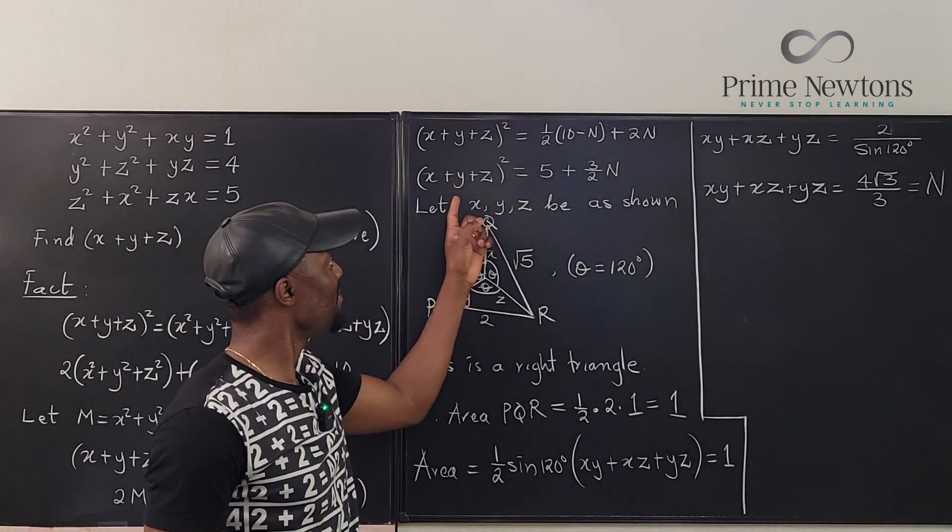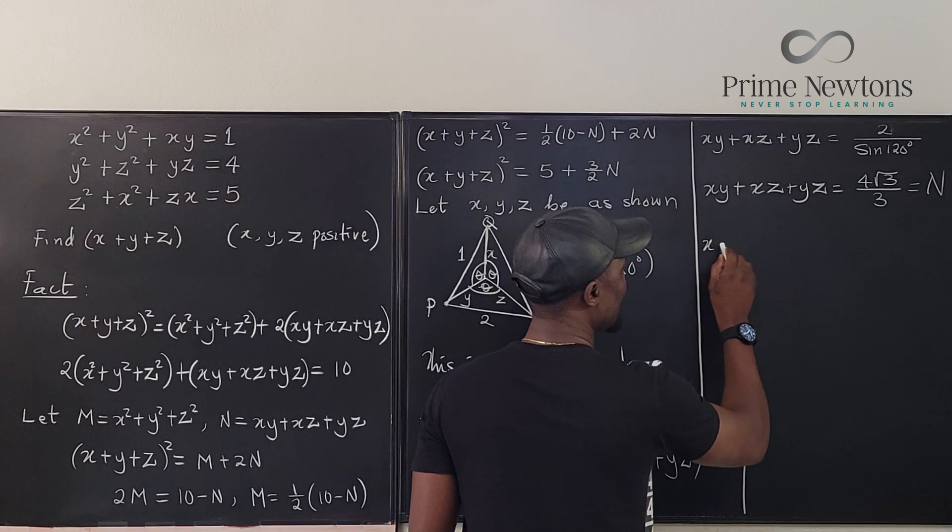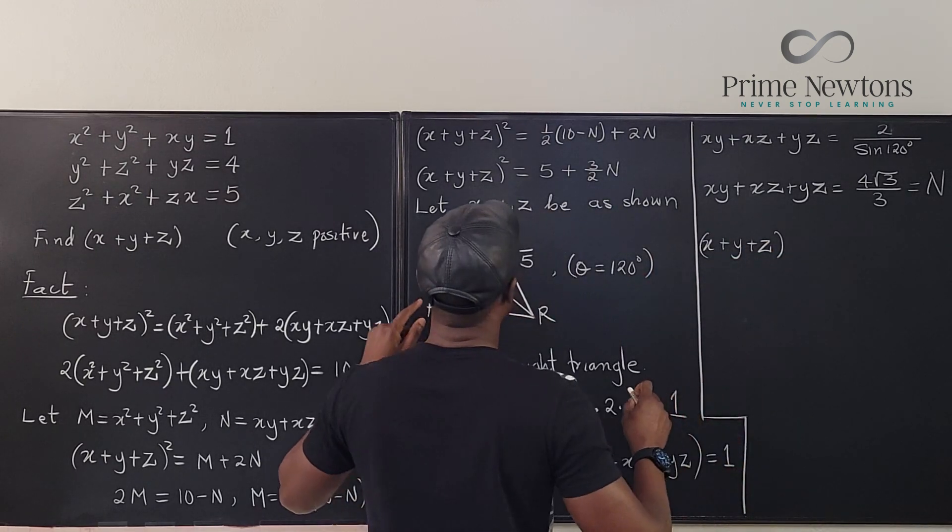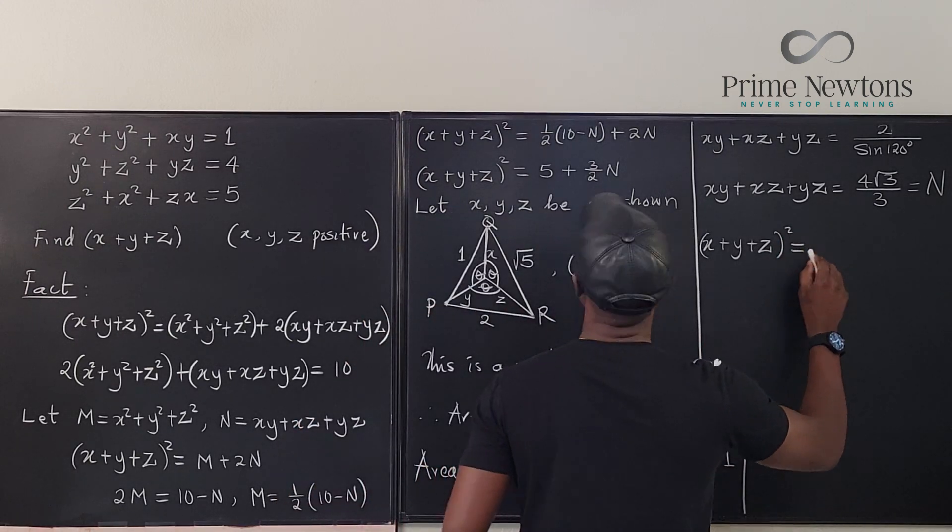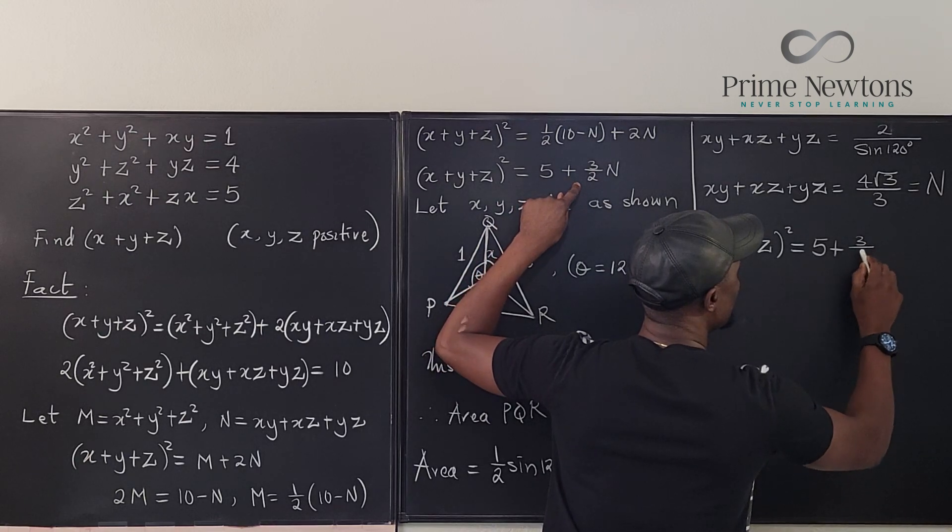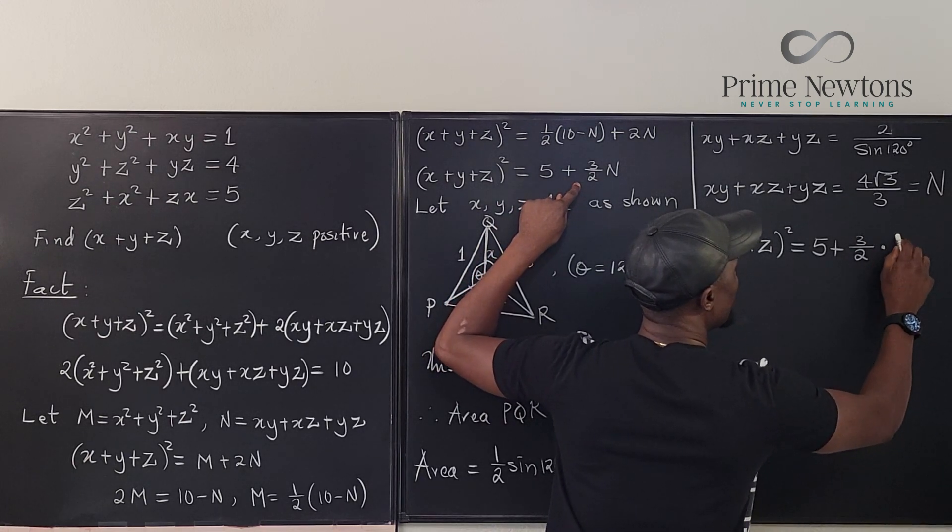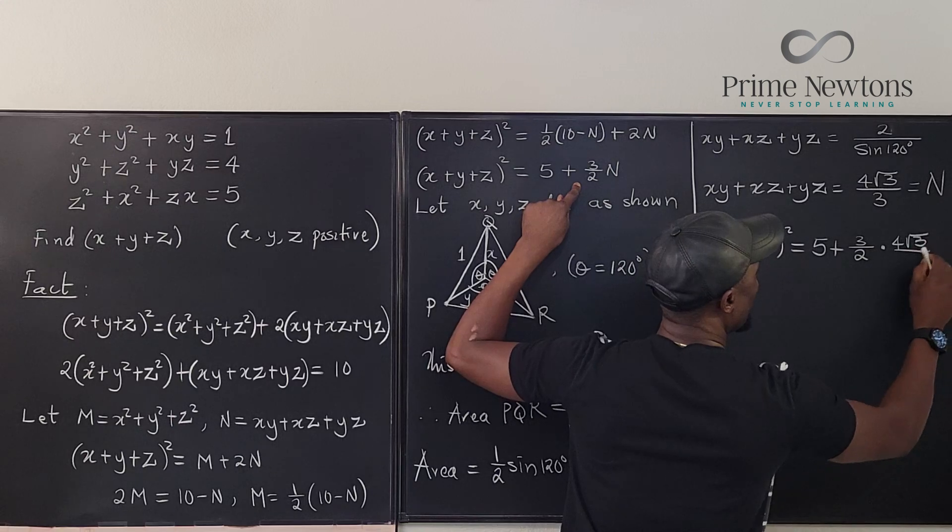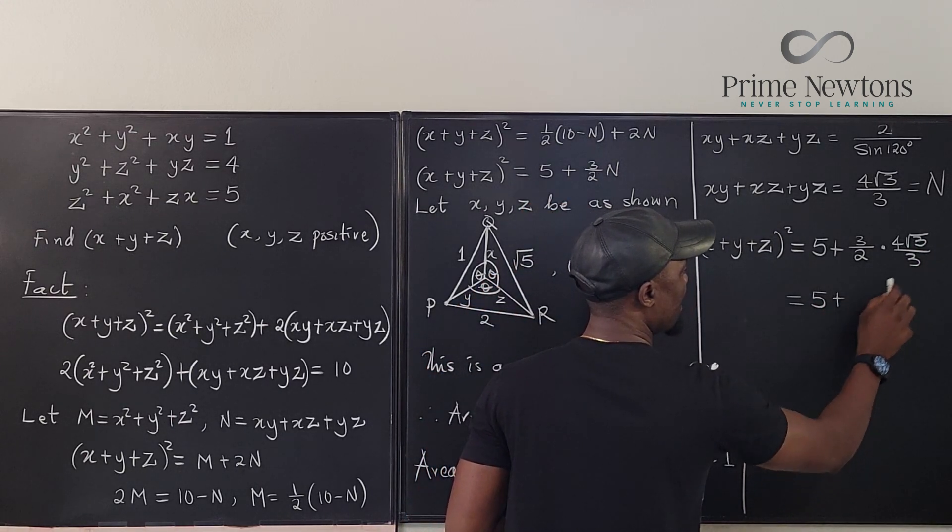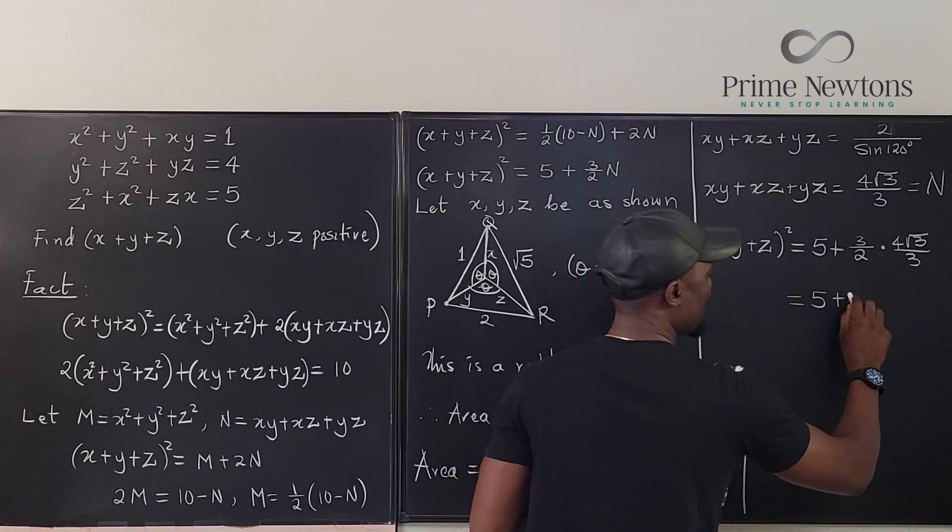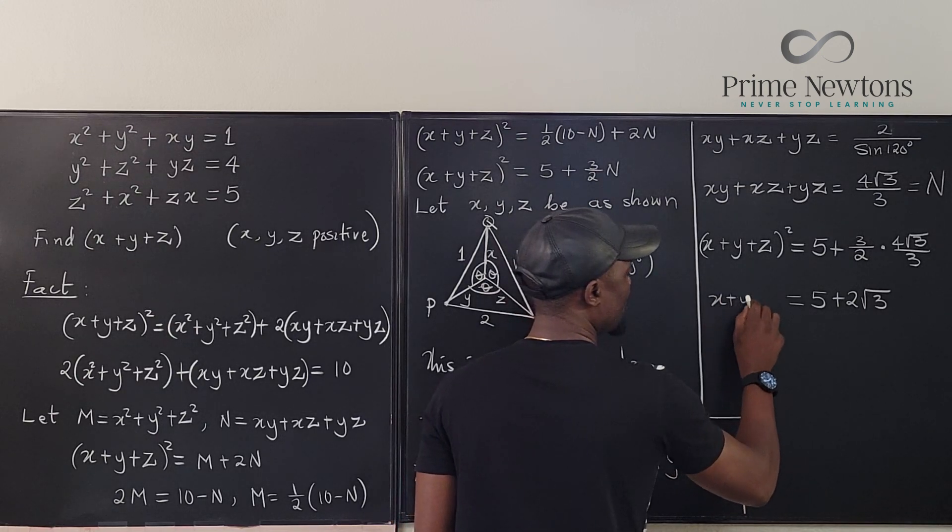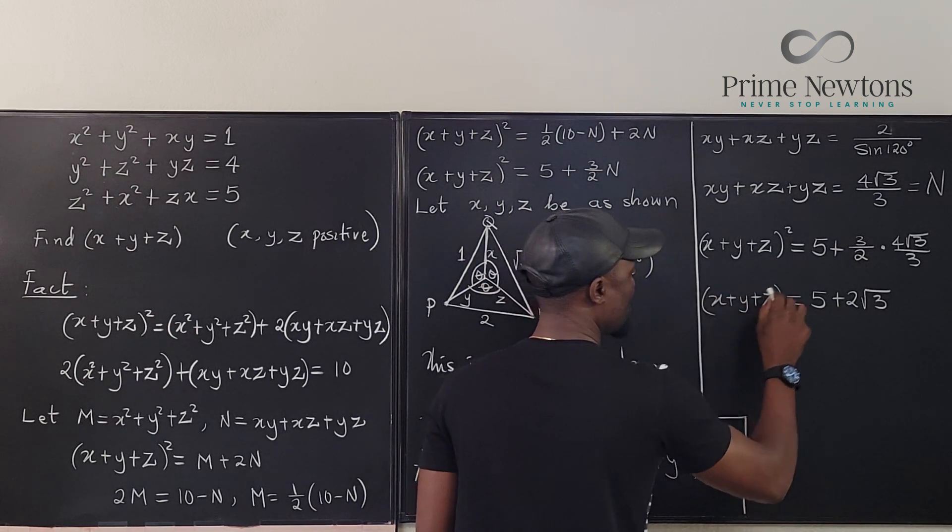Go back to the claim here and say that X plus Y plus Z squared is equal to 5 plus 3 over 2 times 4 root 3 over 3. That's 5 plus 2 root 3. So that's our X plus Y plus Z squared.